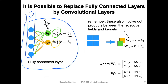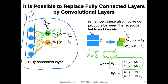We can do the same thing — exactly the same computation — using a convolutional layer. Let's say we have a two by two image here. We can have a kernel with one input channel and two by two kernel size. And this would be our w one, the first kernel — let's say the green one here. So this is one kernel.